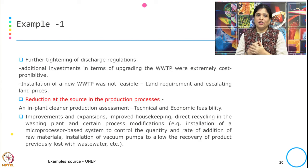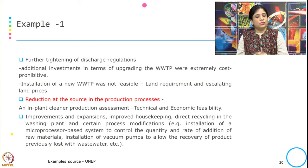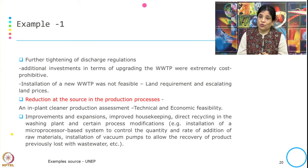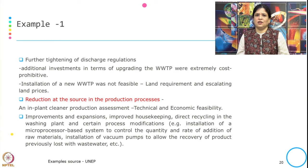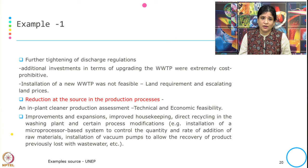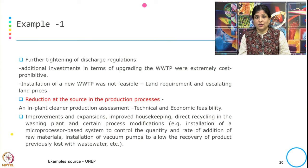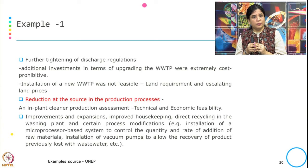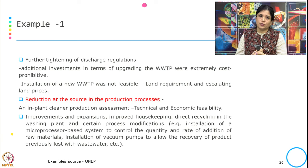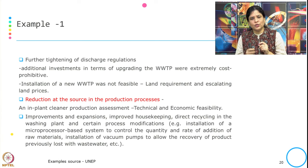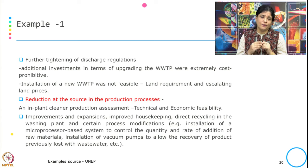Further tightening of the discharge regulation happened — it was reduced even below 20 mg per litre, tightened further. The options for the company were either additional investment to upgrade the wastewater treatment plant or getting into a new wastewater treatment plant. Additional investment to upgrade the WWTP was extremely cost-prohibitive, involving a chunk of cost that was not feasible for the company.